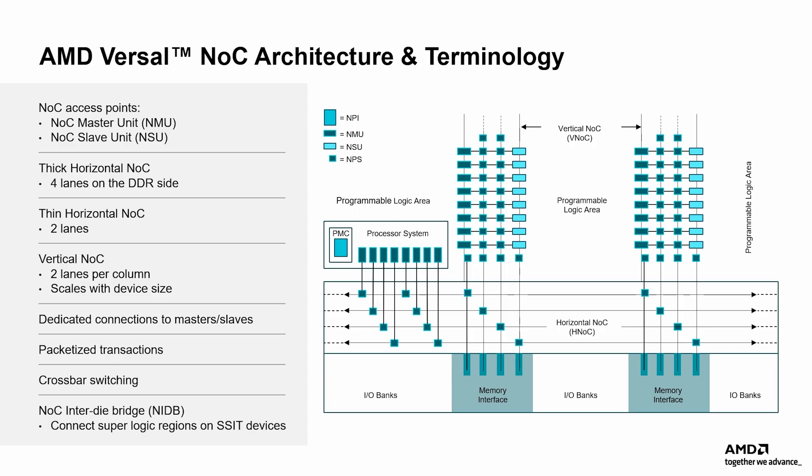This packet-based protocol allows the NOC to route traffic efficiently across the chip using dedicated horizontal and vertical links. The ingress and egress points to the NOC are the NOC master and slave units, which provide asynchronous clock domain crossing, rate matching, and packetization from or to AXI3, AXI4, or AXI4 stream protocols and the NOC packet protocol. The horizontal NOC channels are located at the top and bottom of the device, sitting close to high-throughput peripherals like DDR memory controllers, PCIe blocks, and processing systems. The vertical NOC provides routing along the height of the chip, with up to eight vertical NOC paths determined by die size and the number of hard blocks like DDR-MCs.